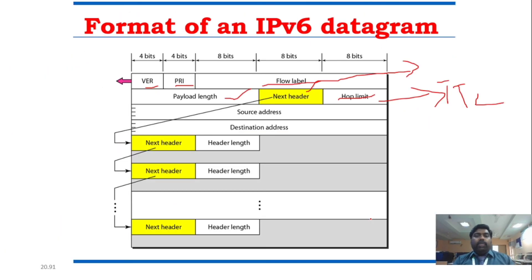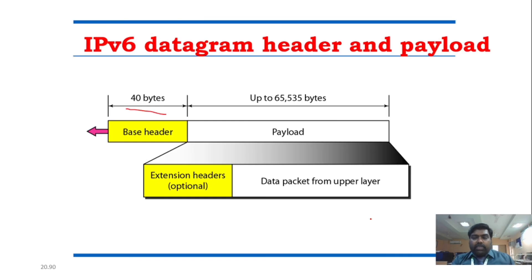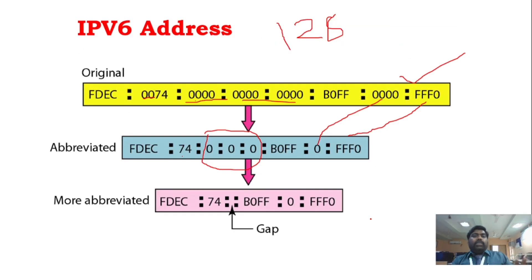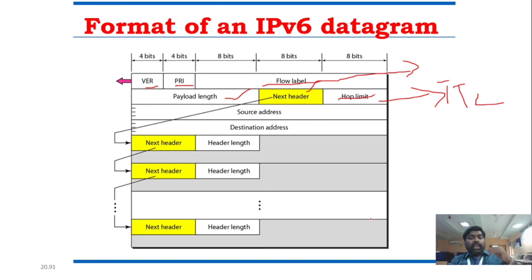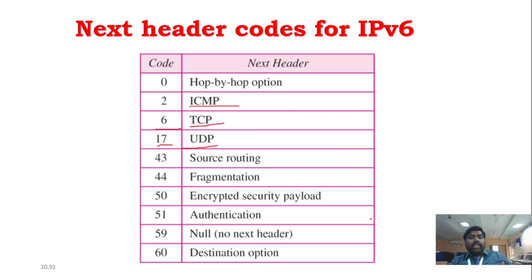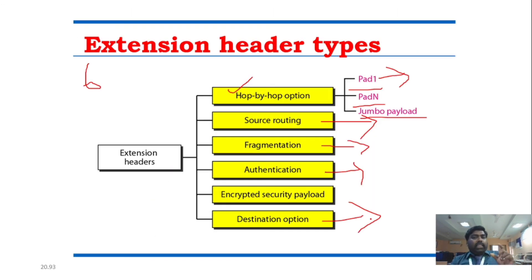So to summarize IPv6: we covered what IPv6 is, why we are going for IPv6, the IPv6 address format, new features of IPv6, what the next header is, and what the extension headers are.